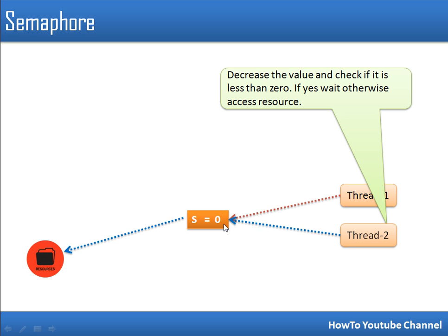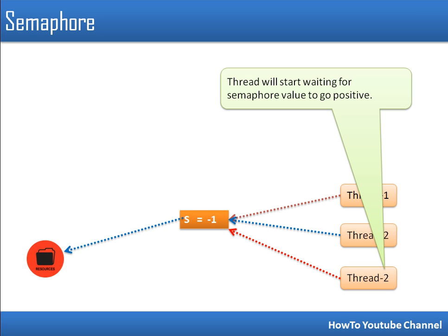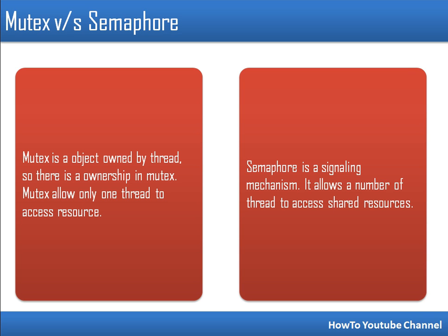But if a third thread wants to access the resource, it decrements s to minus one, so that thread has to wait — it cannot access the resource because only two simultaneous accesses are allowed. Whenever one of the first two threads is done, it increments the value of s, and as soon as it is incremented the third thread starts execution. So semaphore is a signaling mechanism — there is no ownership. In contrast, mutex is an object owned by a thread. The thread holding the mutex can access the critical section, whereas semaphore just signals how many simultaneous accesses are allowed. Thank you very much for watching.